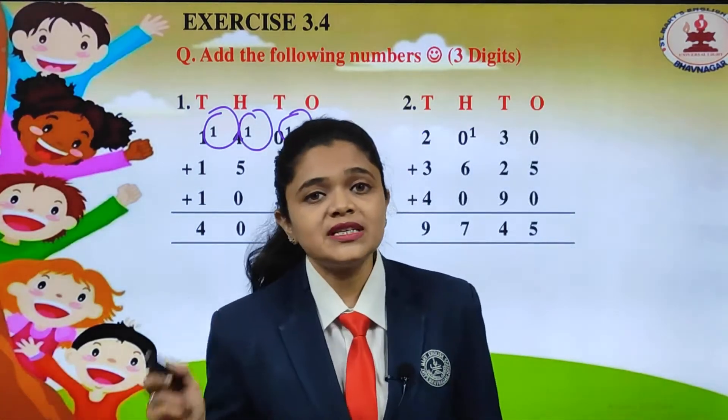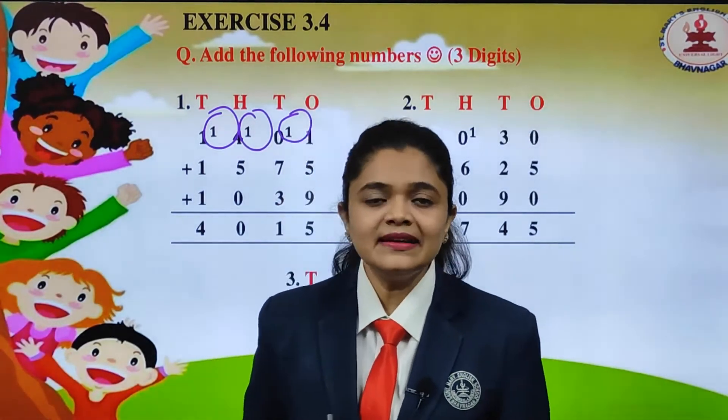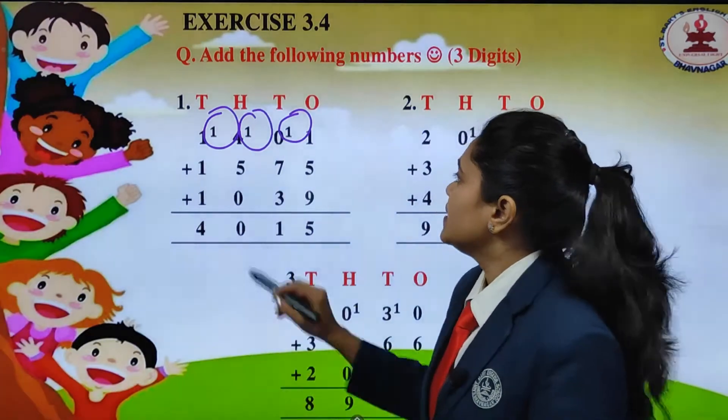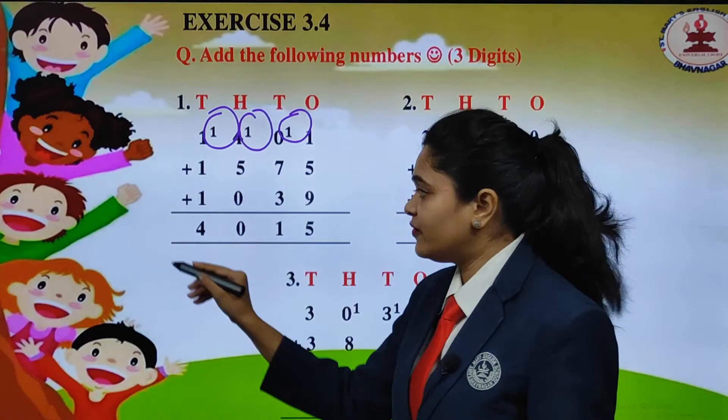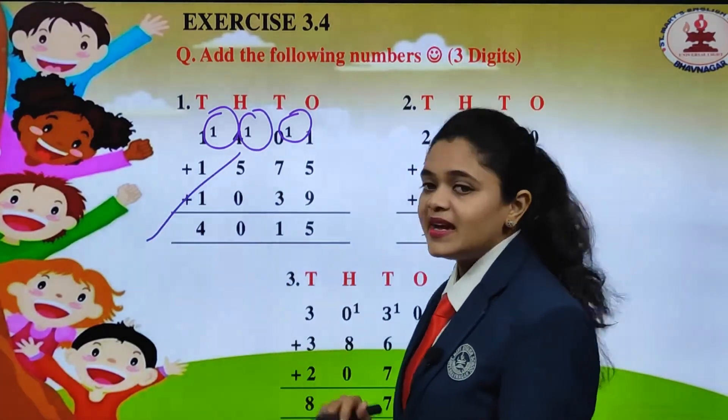1 we will add in which place value? We will add in thousands place value. So 1 plus 1, 2. 2 plus 1, 3. 3 plus 1, 4. So in total what is the answer? 4015.